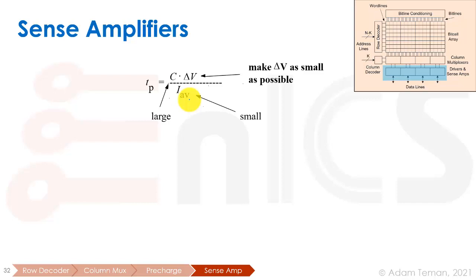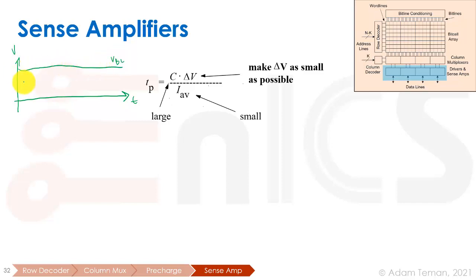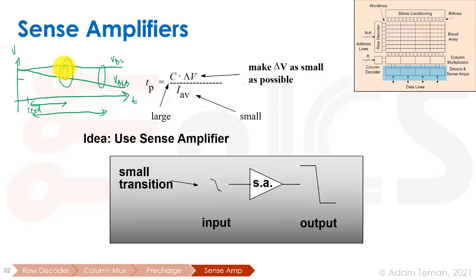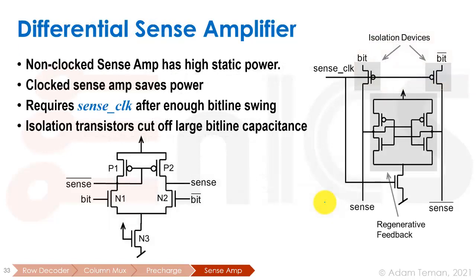Looking at the timing diagram: if one side is storing a one, VPL stays at VDD. When the read starts, VPL_B starts going down. If we can recognize this small difference rather than waiting for a full swing, the propagation delay T_PD is much smaller. That's what the sense amplifier does — it takes the smallest possible change and turns it into a clean one or zero. It's essentially a comparator that converts a small transition into a large digital output.